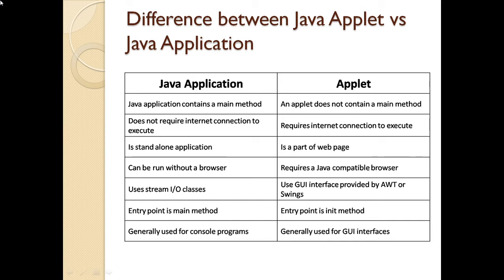The entry point for Java application is the main method. Whereas, the entry point for applet is the init method. Now, Java applications are generally used for console programs and applets are used for GUI interface. This is the basic difference we had seen in the Java application and the applet.